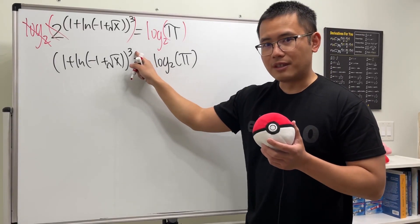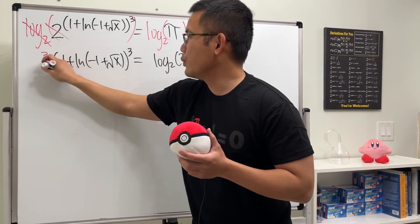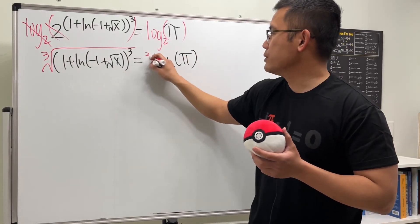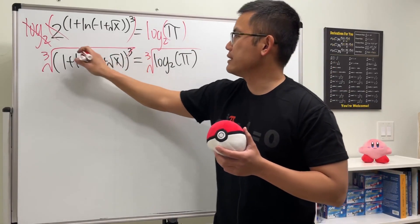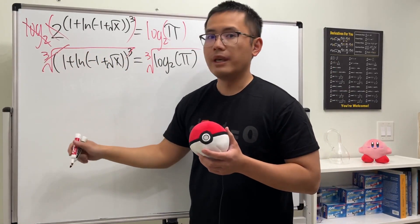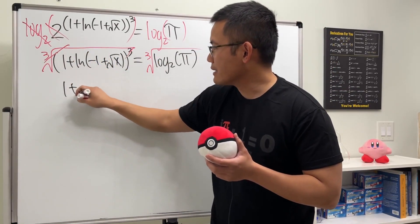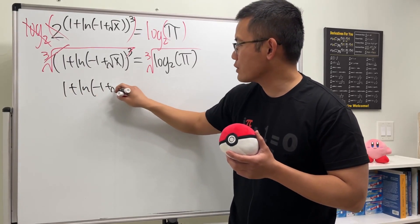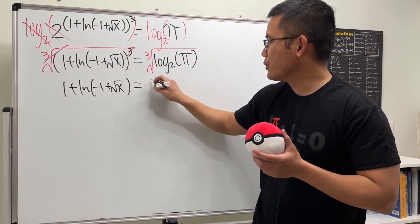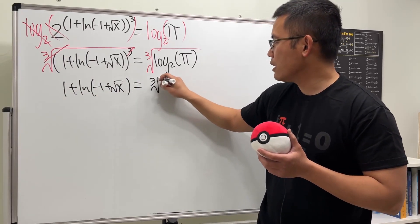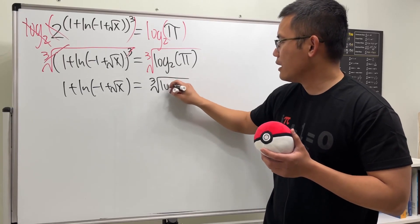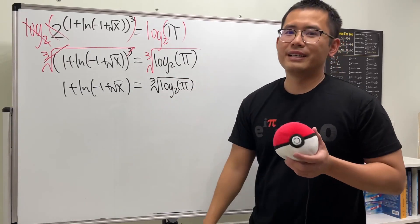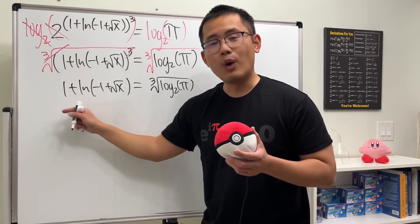Next, we need to get rid of the third power by taking the cube root on both sides. This way those cancel, and we're left with one plus ln of negative one plus square root of x, equal to the cube root of log base 2 of pi.